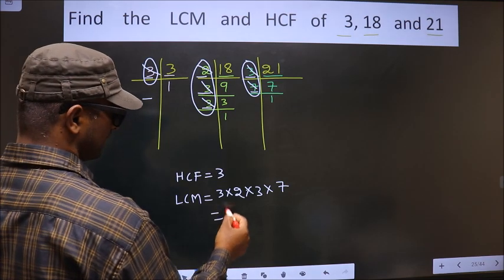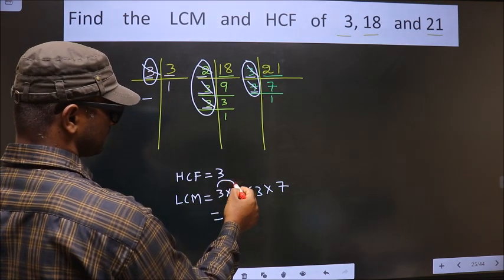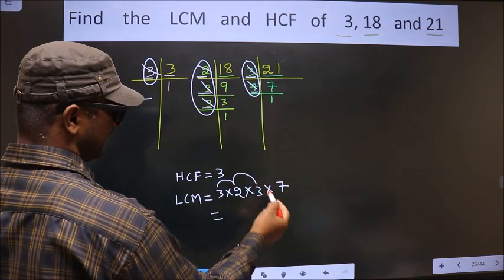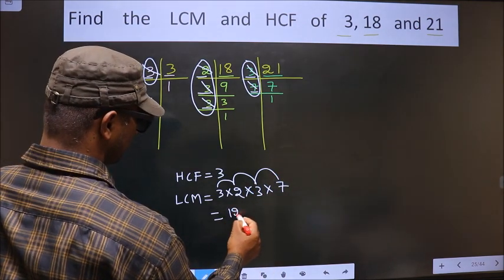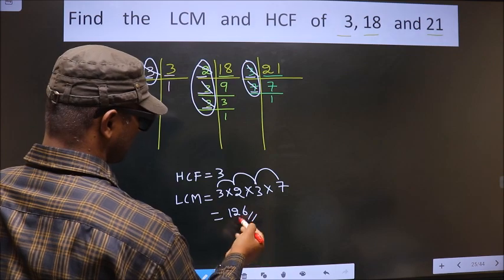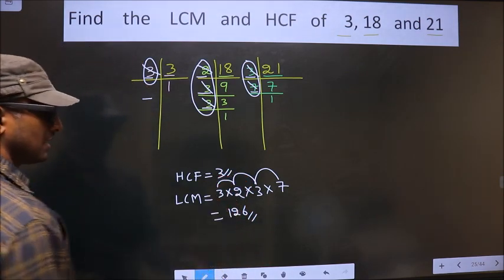That is 3 times 2, 6. 6 times 3, 18. 18 times 7, 126. So this is our LCM and this is our HCF.